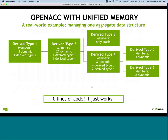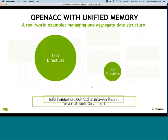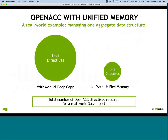For the four-level derived type application using managed memory, I don't need any data directives - I can take them all out. Going from 107 lines of directives per operation down to zero. When the developers took the whole application with manual deep copy, they had 1,200 directives. With unified memory there are essentially no data directives - all directives now talk about parallelism, which is where they should be.